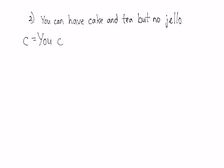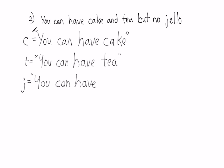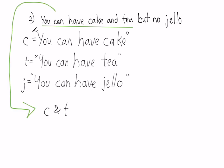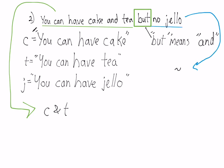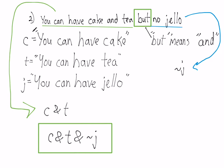Number 2: 'You can have cake and tea, but no jello.' Here you have three components: you can have cake, you can have tea, and you can have jello. The first part, 'you can have cake and tea,' is a conjunction, which you can write as c and t. The word 'but' actually means the same thing as the word 'and' — for example, saying someone is 'smart but pretty' is just saying they are smart and pretty. 'No jello' translates to the negation of j. Combining all that, you have c and t and the negation of j. You don't have to include brackets in this case, since it's not ambiguous.